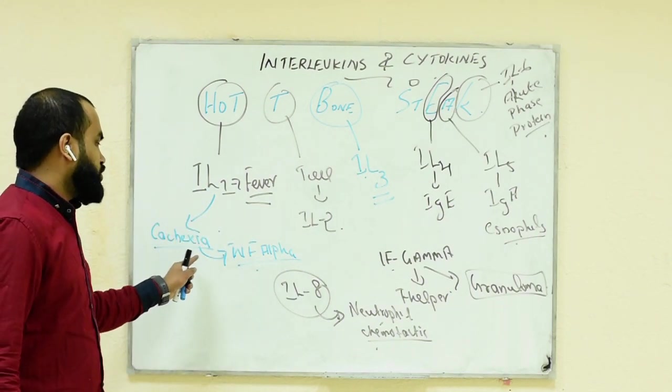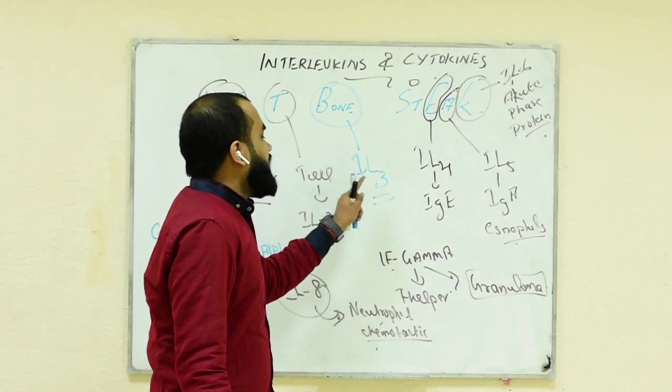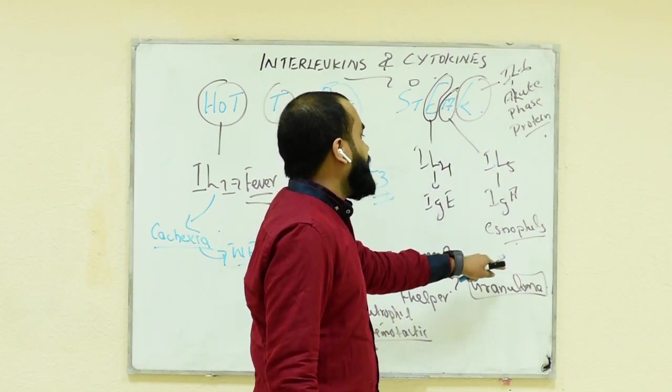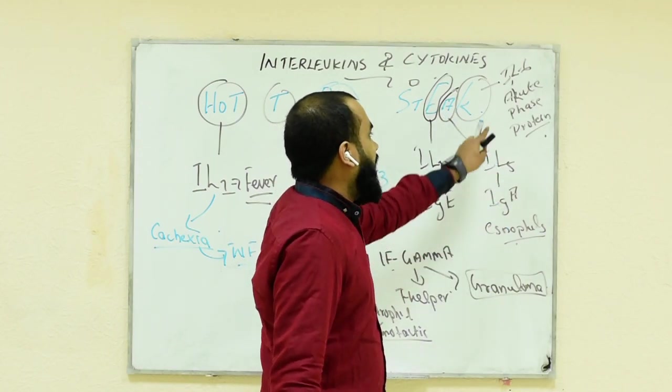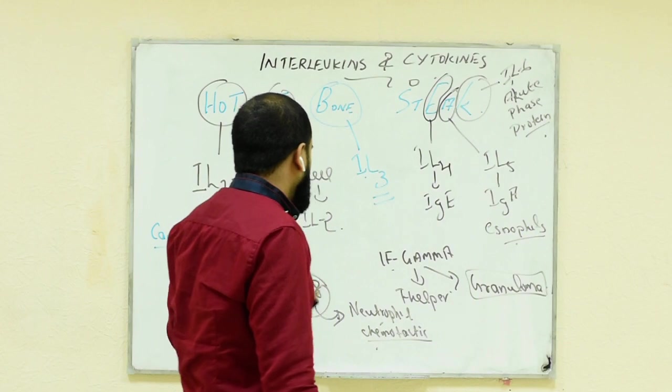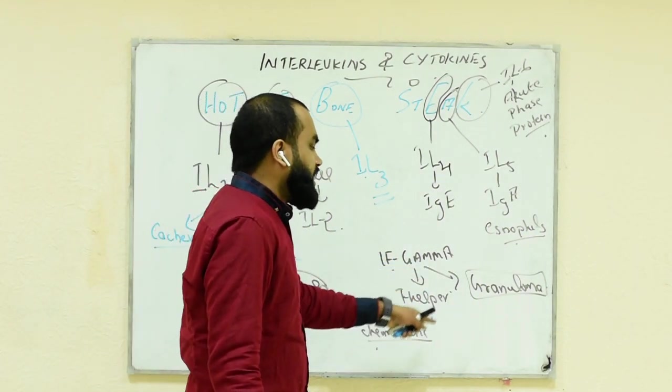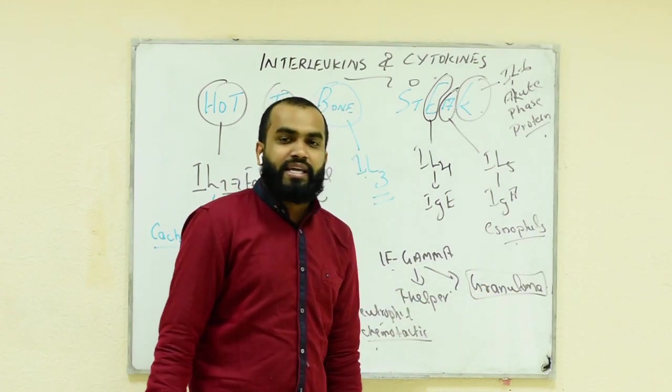Fever IL-1, cachexia IL-1 together with TNF alpha, IL-2 T cell, IL-3 bone, IL-4 IgE immunoglobulin E, IL-5 IgA and eosinophil, IL-6 acute phase protein, IL-8 neutrophil chemotactic agent, interferon gamma controls granuloma as well as T helper cells.